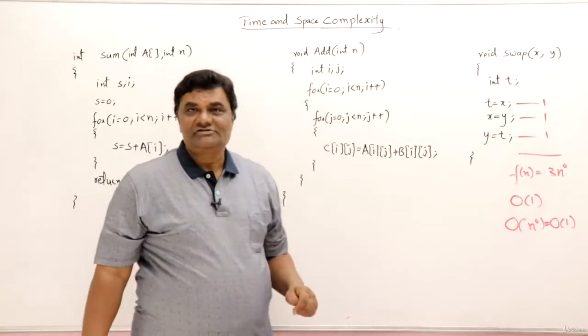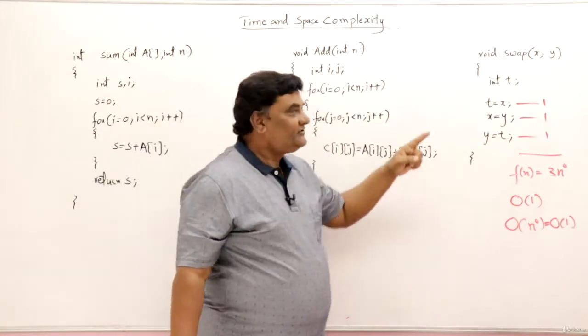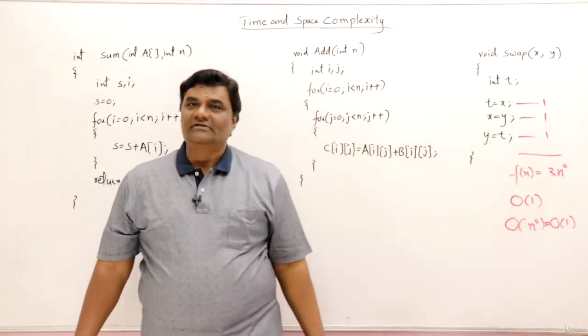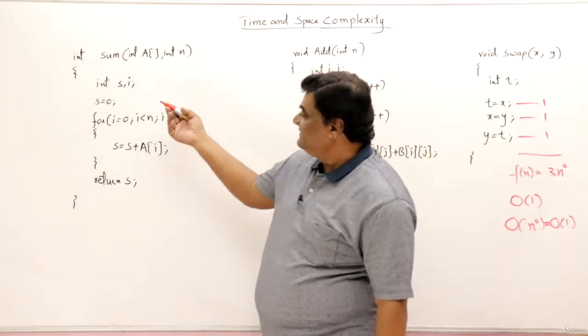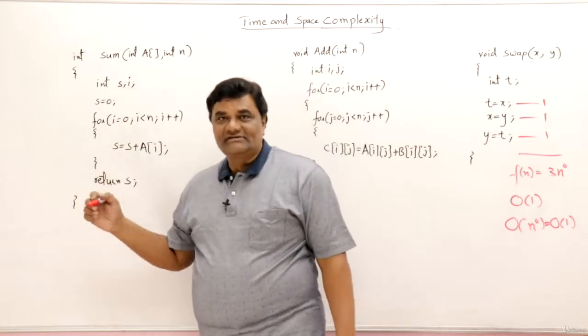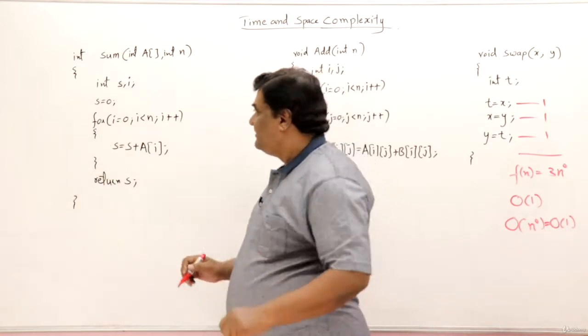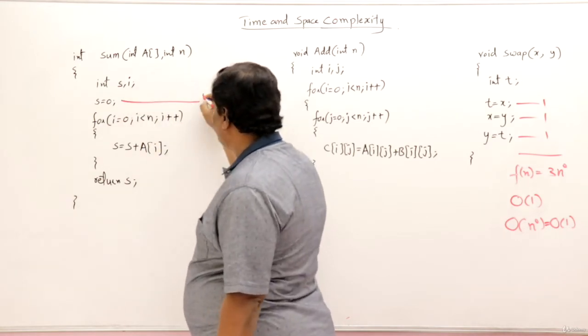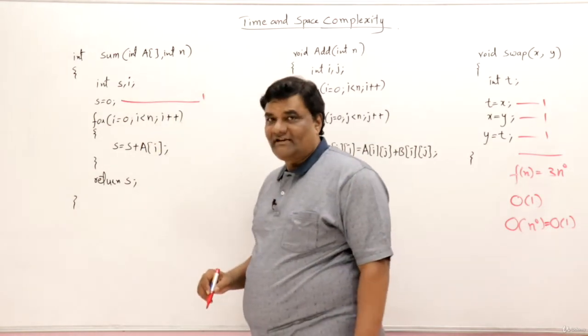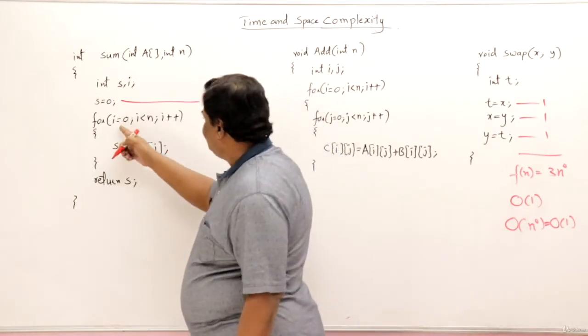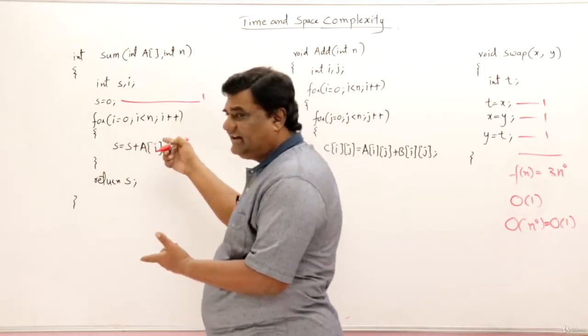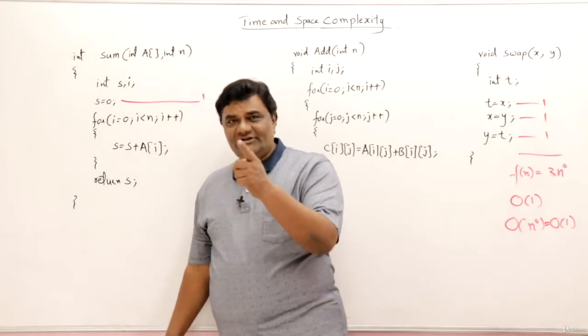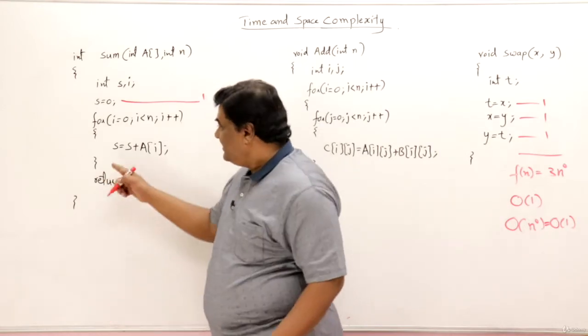So this was a simple function and it is taking constant time. It's not a proper C function; I have not written data types and all, just pseudo code. Now this is exactly like a C function. Let us look at this one. Let us look at the statement. First statement: assignment, one unit of time. Then assignment, condition, assignment. This is plus plus, increment, just an operator. But is it executed just one time? No. This is a loop.